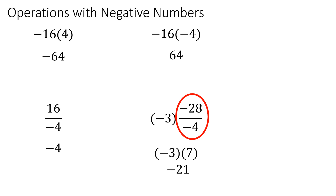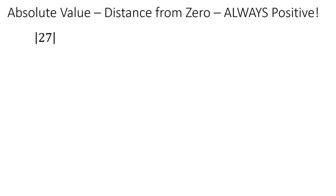So that's just a quick overview of operations with negative numbers. The next thing we want to look at is absolute value.